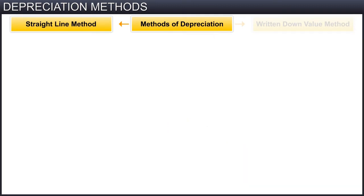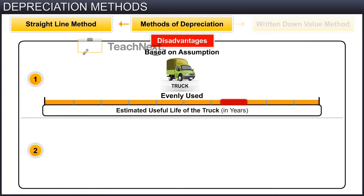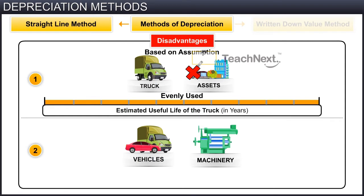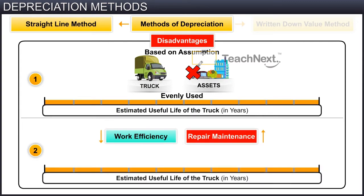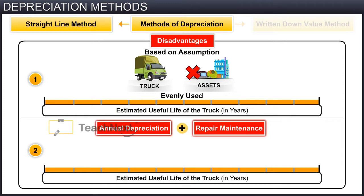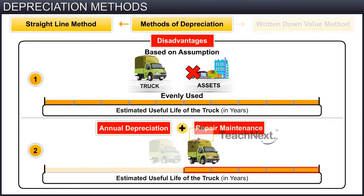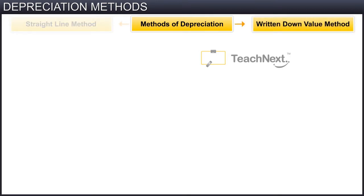However, this method does have a few disadvantages. It is based on the assumption that the asset is evenly used throughout its life, which is not always the case. For assets such as vehicles and machinery, the work efficiency reduces while repair and maintenance expenses increase over time. So the amount charged as depreciation and repairs together will not be uniform. In fact, depreciation and repairs together will be less in the initial years — meaning the benefit from the asset is more when the asset is new — and as the asset becomes older, the combined amount keeps increasing while the benefit steadily reduces. These disadvantages are overcome in the written down value method.